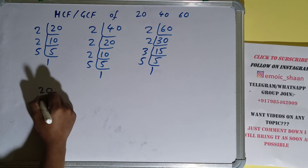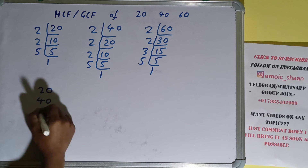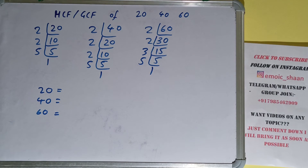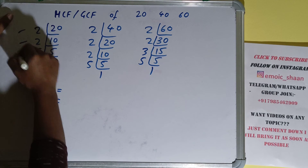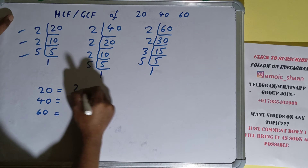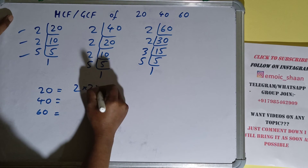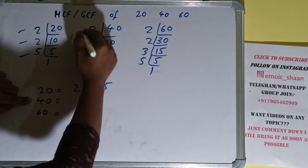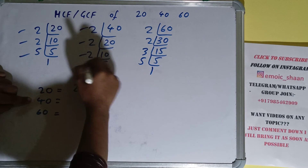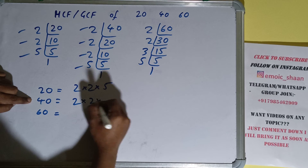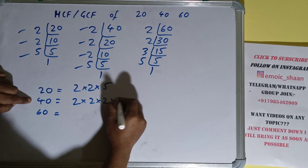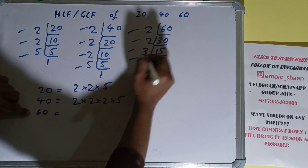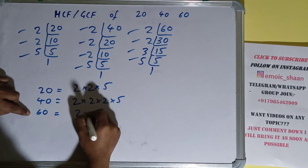Now we write down each number with its prime factors. For 20, the prime factors are 2 × 2 × 5. For 40, the prime factors are 2 × 2 × 2 × 5. For 60, the prime factors are 2 × 2 × 3 × 5.